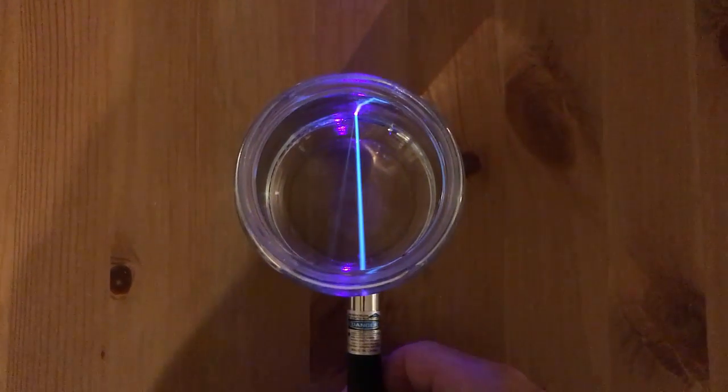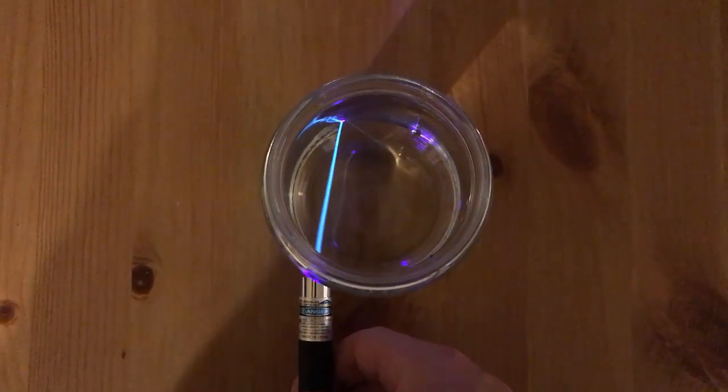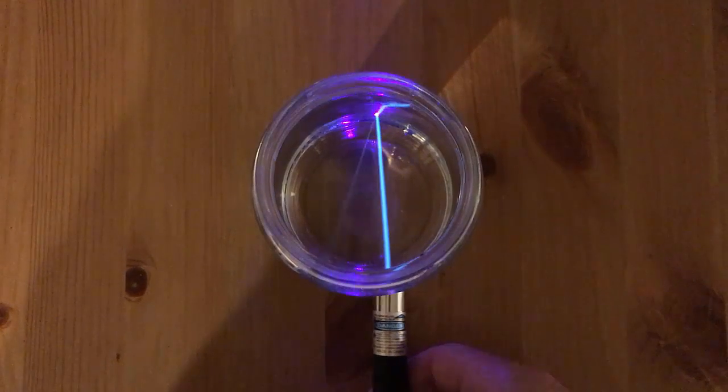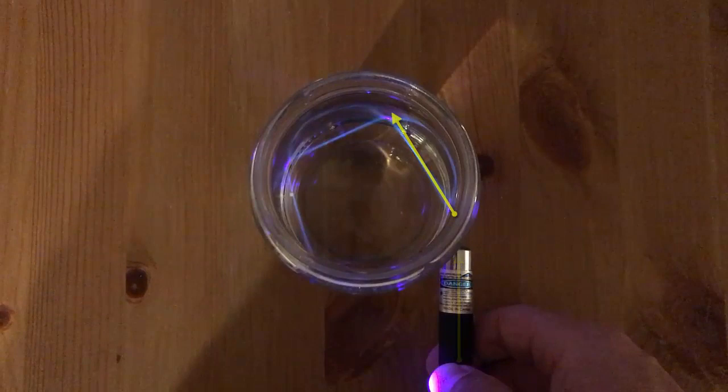I move it back the other way, it changes direction as well. It always bends when it enters the water. If we get it at a far angle, we can get a whole bunch of reflection.